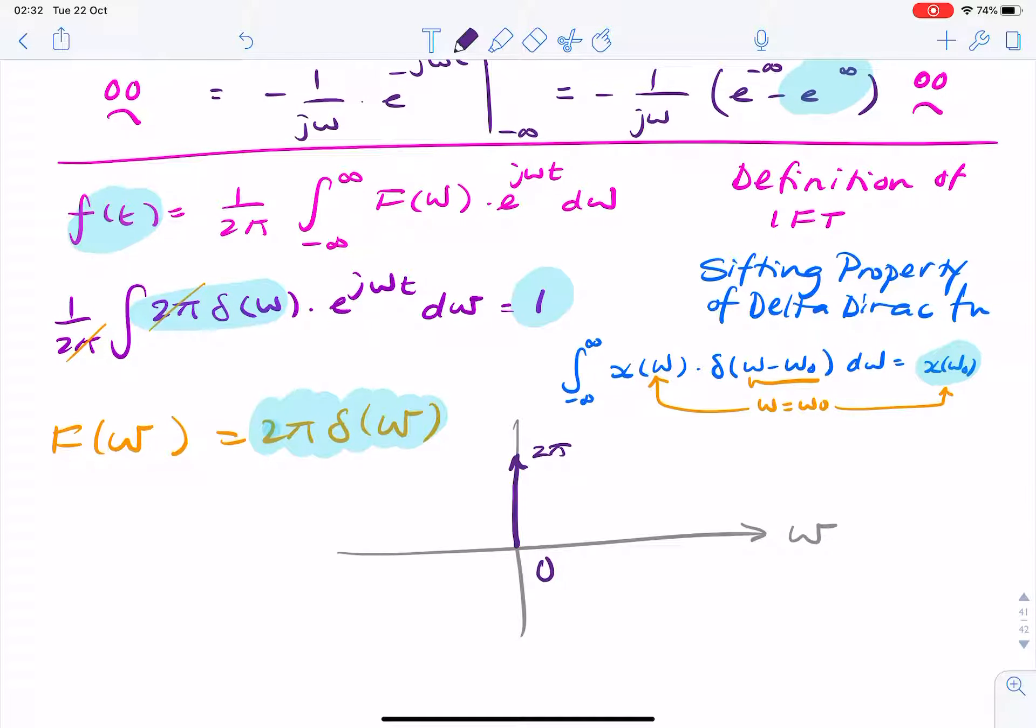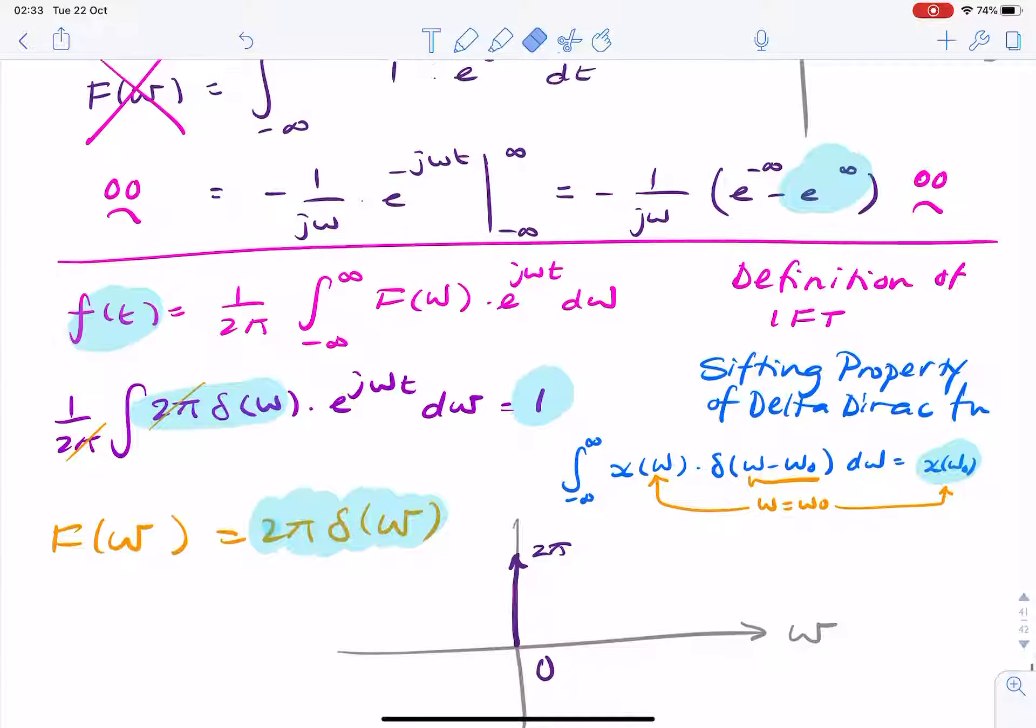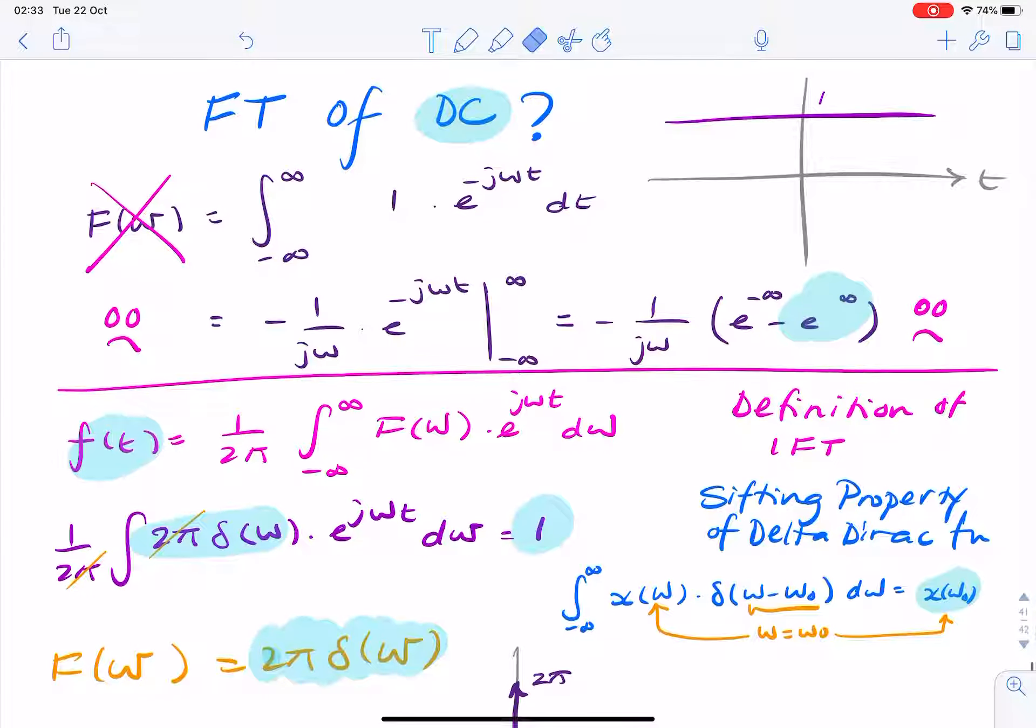And we now know that the strength or the weight or the area of this impulse is 2 pi. So the Fourier transform of a DC signal is an impulse with strength or weight equal to 2 pi multiplied by the DC value. Because in this question, the DC value had an amplitude of 1. And to do this, to find this, we used the sifting property of the delta Dirac function.